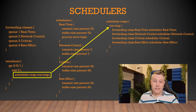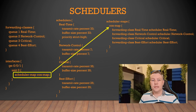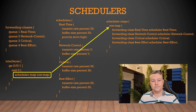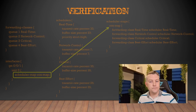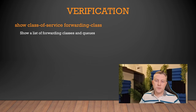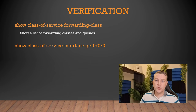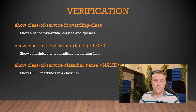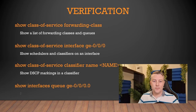When packets are ready to be sent out, Junos will look up the class of service config for this interface, see the scheduler map, and apply the queuing and scheduling we've set up. To finish off, here are some show commands you can use to confirm everything is working properly.